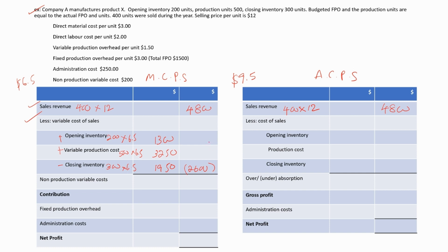We deduct the variable cost of sales from sales revenue. The non-production variable cost is $200, which we also deduct. So the contribution equals sales revenue minus all variable costs, which is $2,000. Now we deduct the fixed production overhead of $1,500 and the administration cost of $250. The net profit under marginal costing is equal to $250.